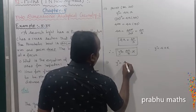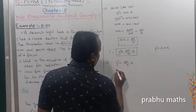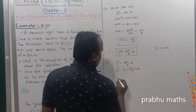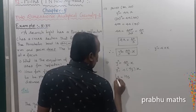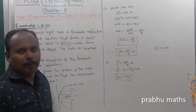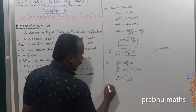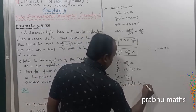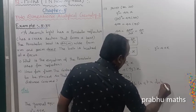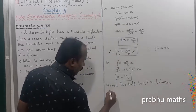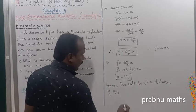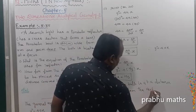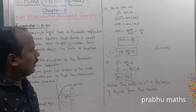Converting to general form: y² = 4 × (10/3) × x, so a = 10/3. Since a is the focus point and the bulb is located at the focus, the bulb is at a distance of 10/3 centimeters from the vertex.